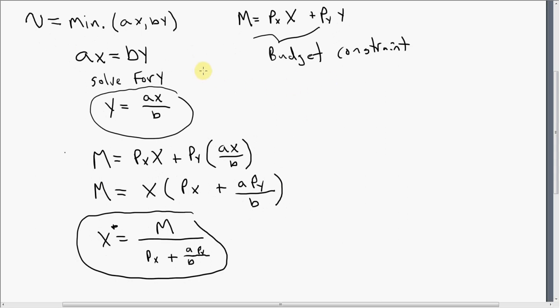And now let's go back to our utility maximizing condition here and solve this for x. If you do that, you'll get x equals b times y divided by a.